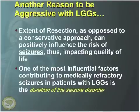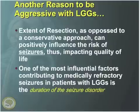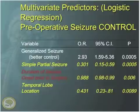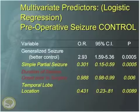Another reason to be aggressive with low-grade gliomas is seizures. Most of these patients will have one or two seizures very well controlled, but other patients will have medically refractory seizures. The most important factor that determines whether a patient is going to continue to have seizures is the duration of the seizure disorder. Patients who have simple partial seizures with a long duration of seizure onset prior to surgery, especially in tumors located in the temporal lobe, have a much higher likelihood of uncontrolled preoperative seizures.